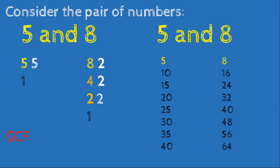From the factors, we can see that 5 and 8 share only the common factor of 1, so the greatest common factor is 1. From the multiples, the first number that appears in both lists is 40, so the least common multiple is 40.